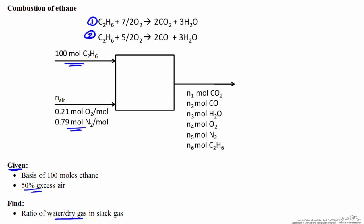If we look at the output — the stack gas — we can find all the components that could possibly make up the output. The first three species are all reaction products. We also have unreacted oxygen, the inert nitrogen from air, and any unreacted ethane that might be present. Based on the information given, let's do the degrees of freedom analysis using both molecular species balances and atomic species balances to see if we have enough information to fully characterize the stack gas and calculate the ratio asked for.